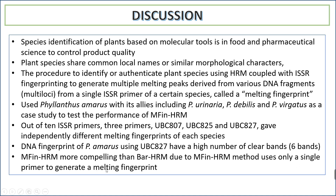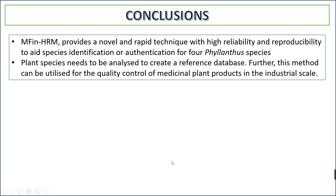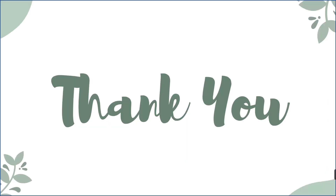In conclusion, MFin-HRM provides a novel and rapid technique with high reproducibility for species identification and authentication of Phyllanthus plant species. More plant species need to be analyzed to create a reference database. Further, this method can be utilized for quality control of medicinal products at an industrial scale. Thank you.